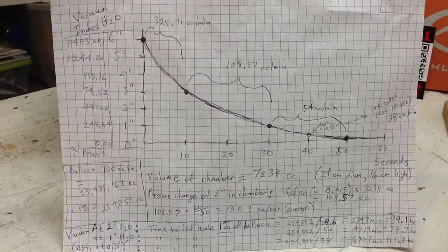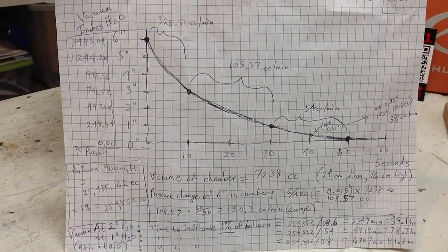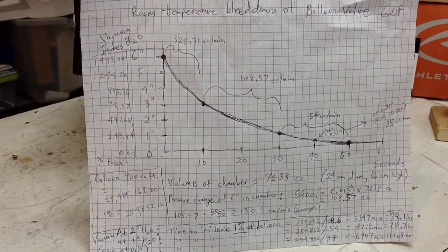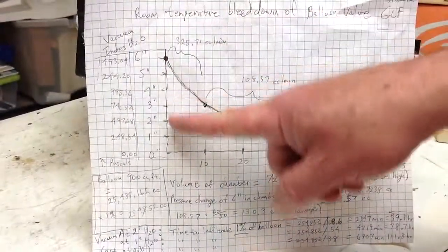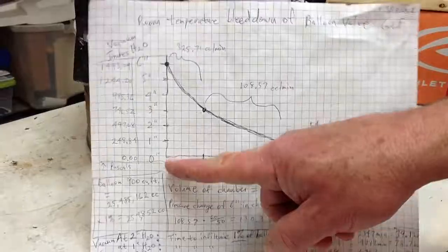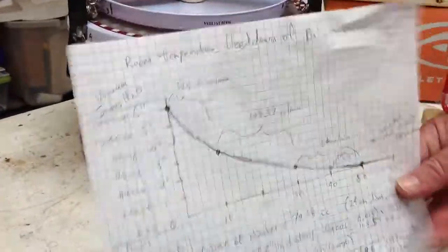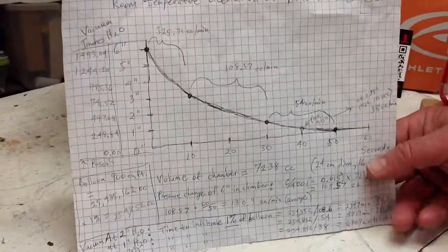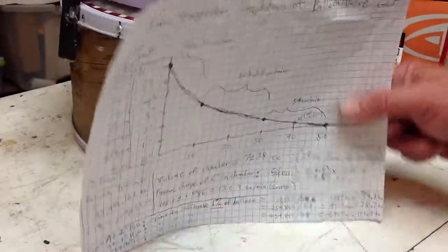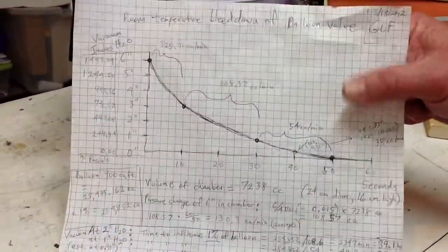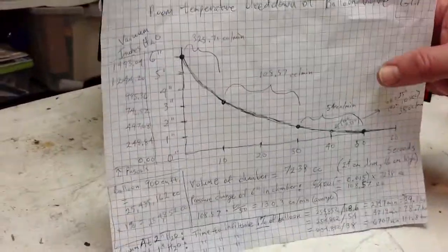The graph basically is some room temperature testing, similar to what was just demonstrated. Essentially, the less vacuum, shown here at six inches to zero inches, the less vacuum you have, the slower the bleed rate. But it does turn out that it seems to be approaching a number that is non-zero.